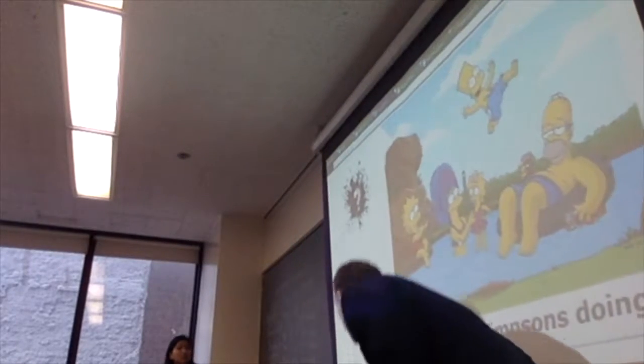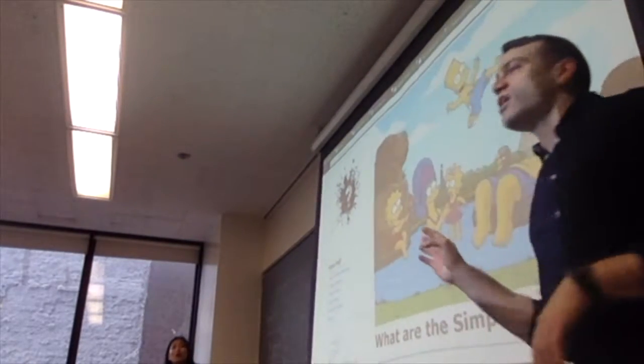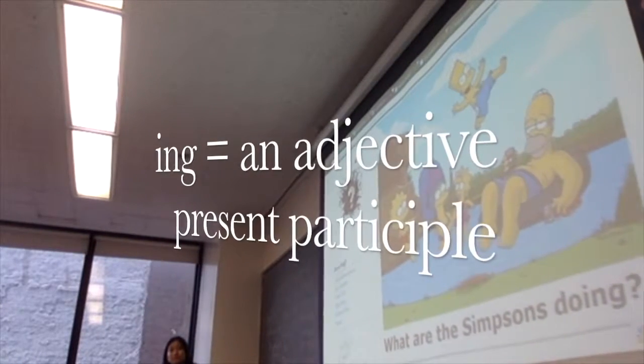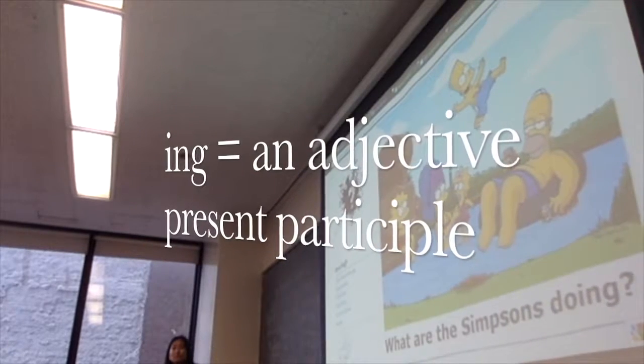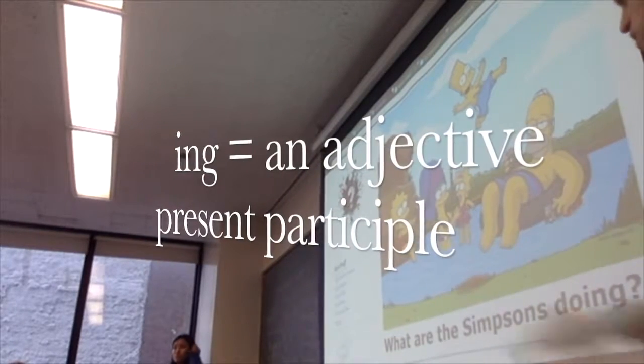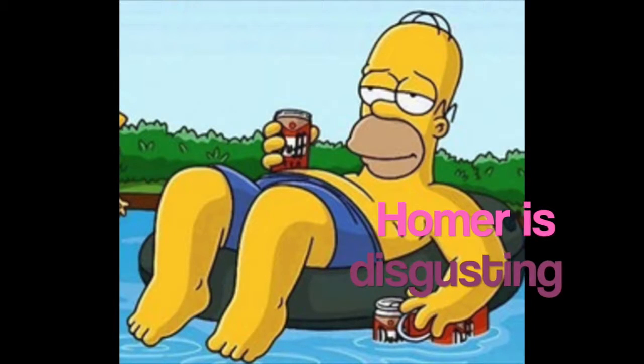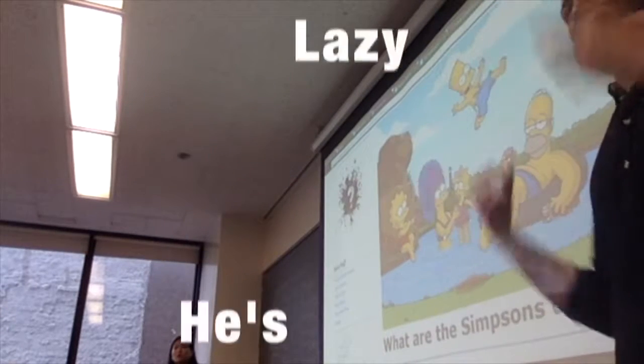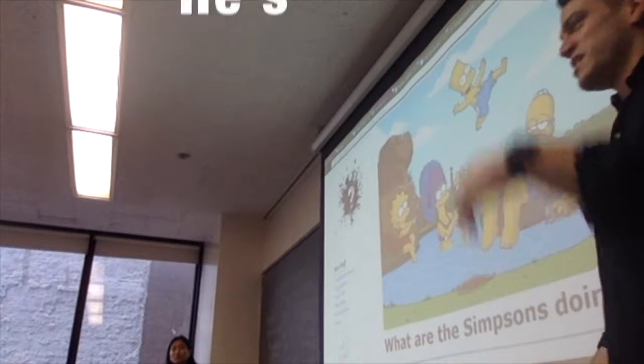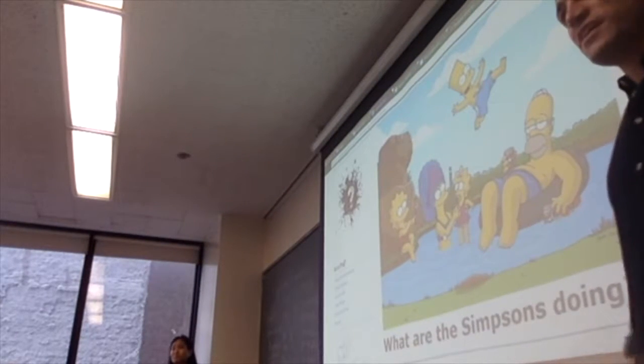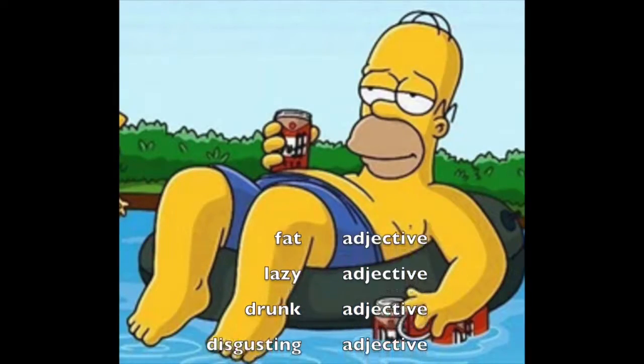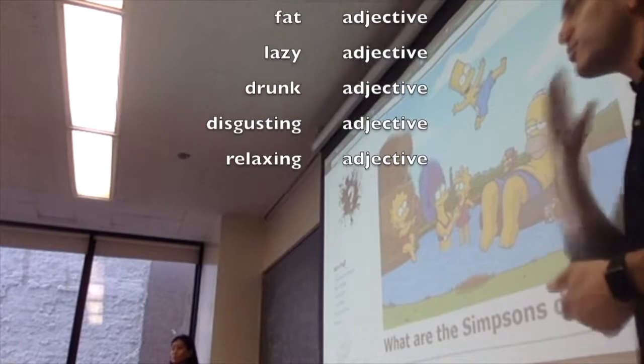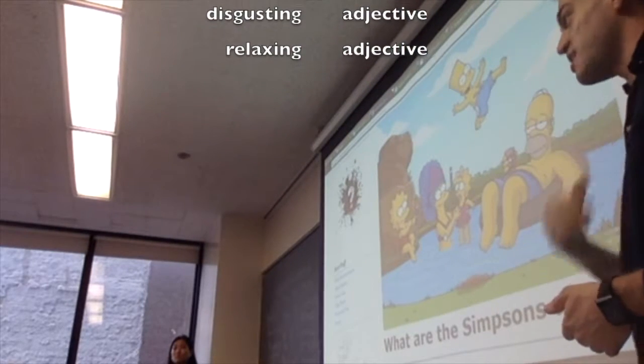It's interesting because we often talk about the continuous as a verb. In reality, the continuous is an adjective. I-N-G is an adjective. Homer's disgusting, right? He's disgusting, he's fat, he's lazy, he drinks all the time. He's disgusting. He's also relaxing. It describes what he's doing. So if it helps you to think of it as an adjective, you can think of it as an adjective too.